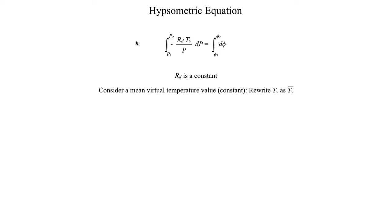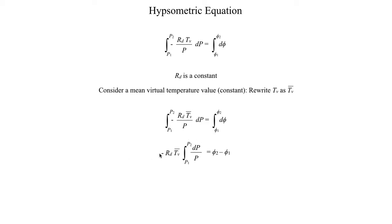Virtual temperature can vary as the pressure varies. So instead of looking at virtual temperature as it varies throughout the pressure levels, we look at the mean value of virtual temperature between the two pressure levels we're interested in. This makes the integral on the left-hand side a lot easier to evaluate. We replace TV with TV-bar to indicate the mean virtual temperature between the two pressure levels, which is therefore a constant that we can pull outside of the integral. So we get minus Rd times TV-bar times the integral of dP over P, equal to phi2 minus phi1.